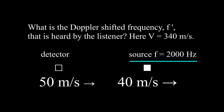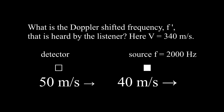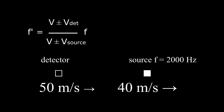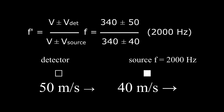The source emits frequency f equal to 2000 hertz and it is moving at 40 meters per second away from the detector. The detector is moving toward the source at 50 meters per second. At this moment the speed of sound is 340 meters per second. What is the Doppler shifted frequency f prime heard by the listener? We write the Doppler equation and then fill in the numbers, leaving the plus and minus signs to choose in a moment.